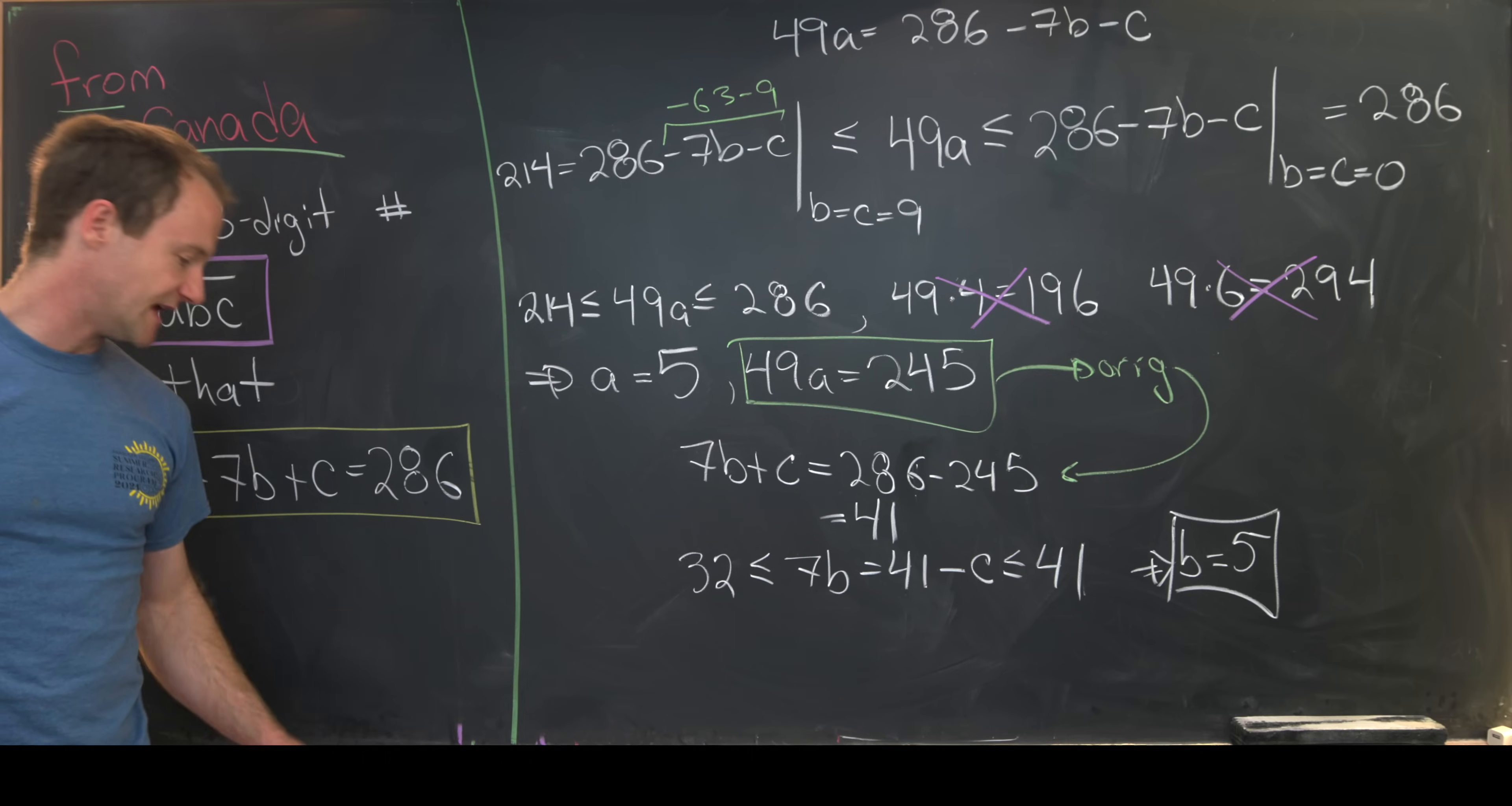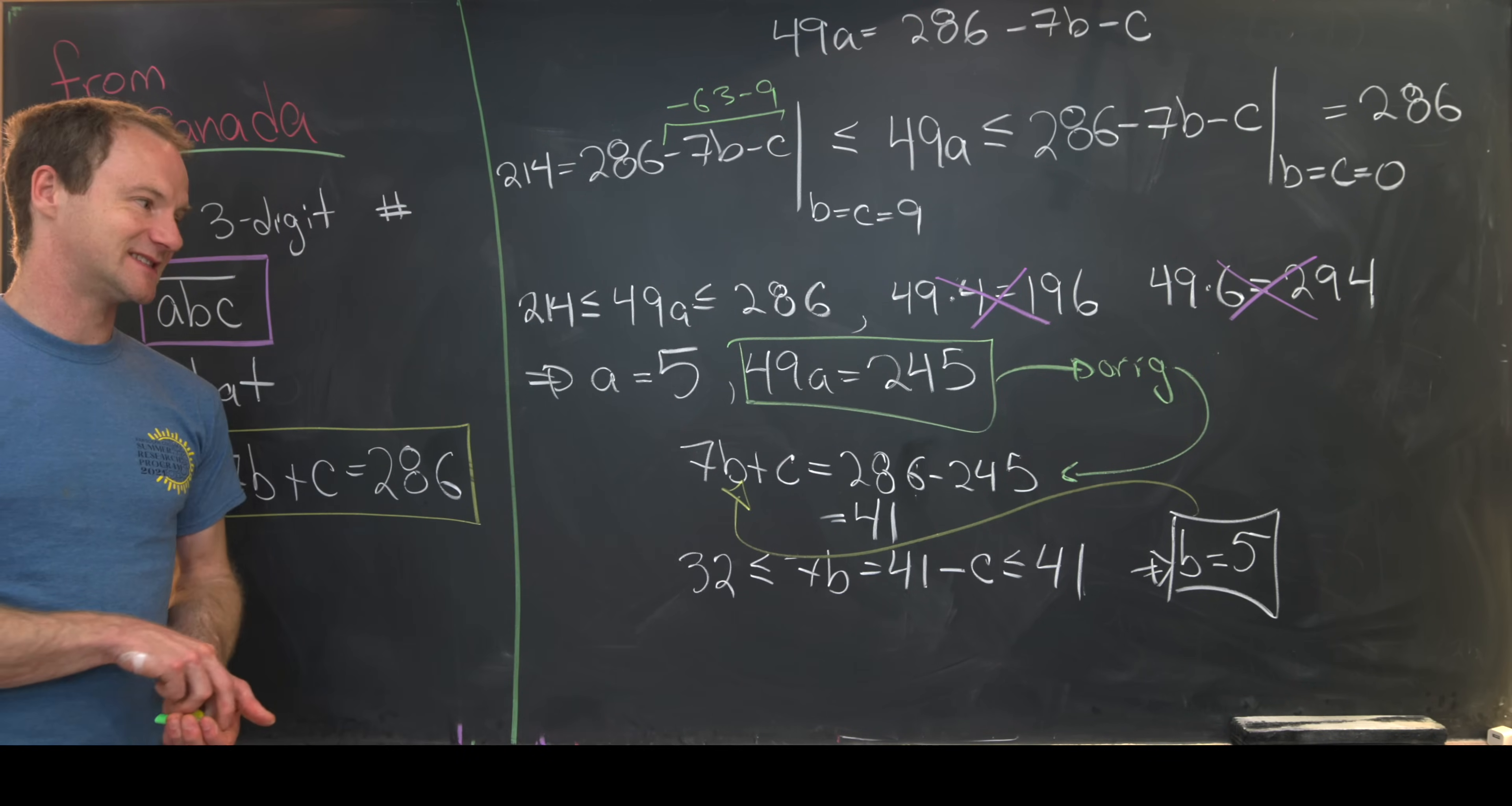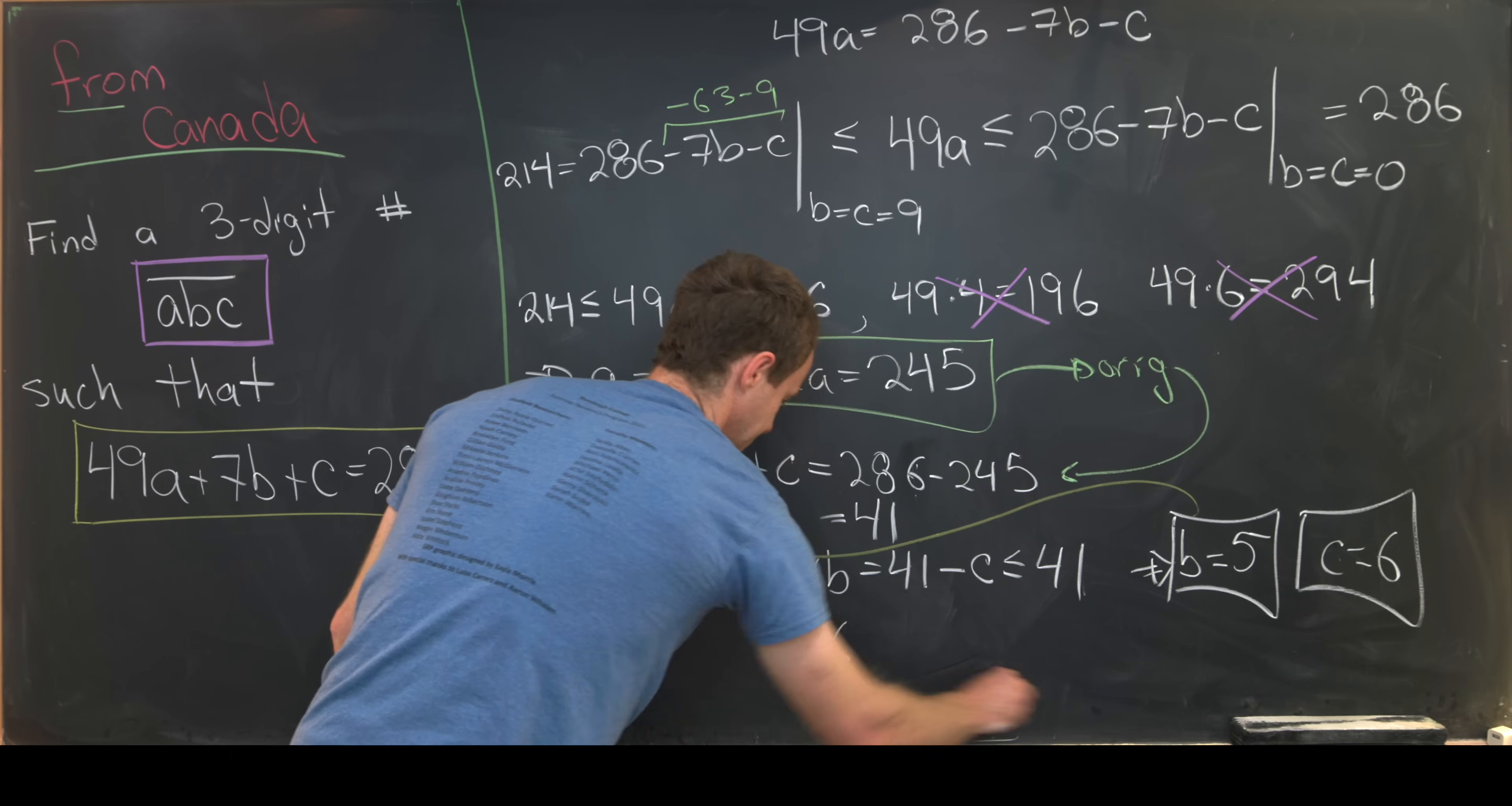So we've got A is equal to 5 and B is equal to 5. And now we can run this value B equals 5 back up here. And we'll see that C must be equal to 6. So that tells us our three-digit number is the number 556.